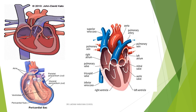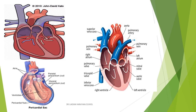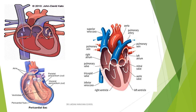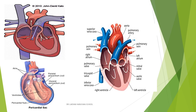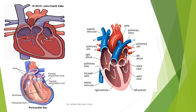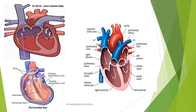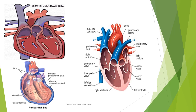Blood is pumped to other body parts by the heart. It carries nutrients, oxygen, waste, and hormones. There are two types of blood vessels: arteries and veins. Arteries carry oxygenated blood, whereas veins carry deoxygenated blood.